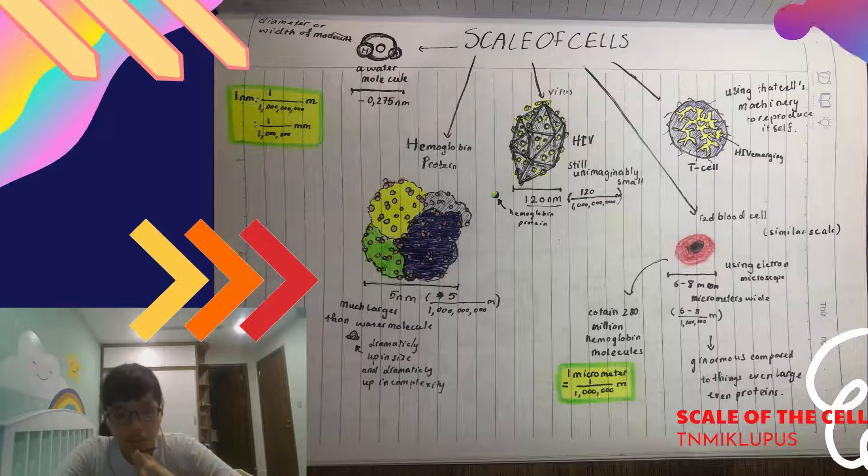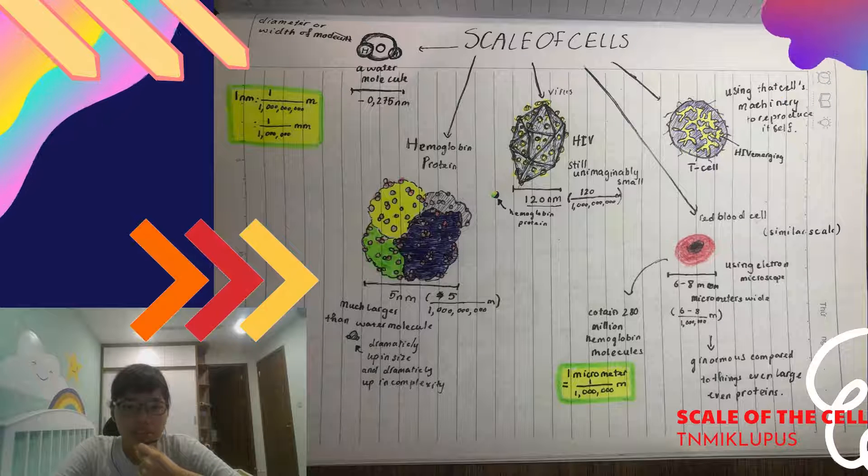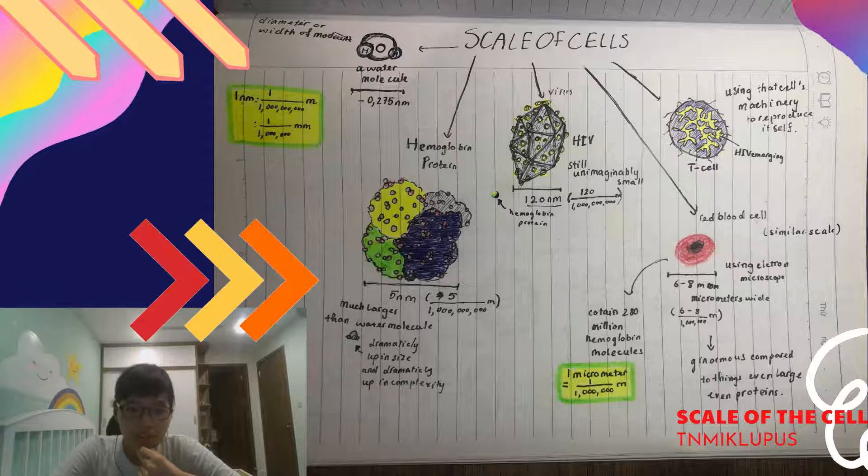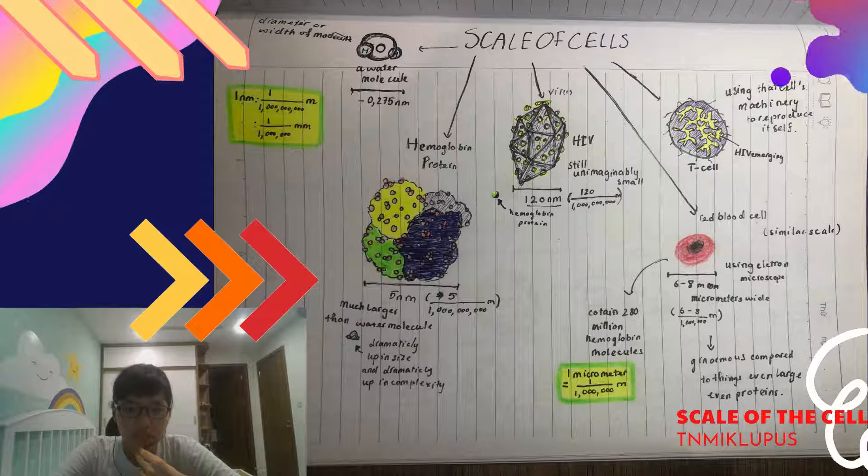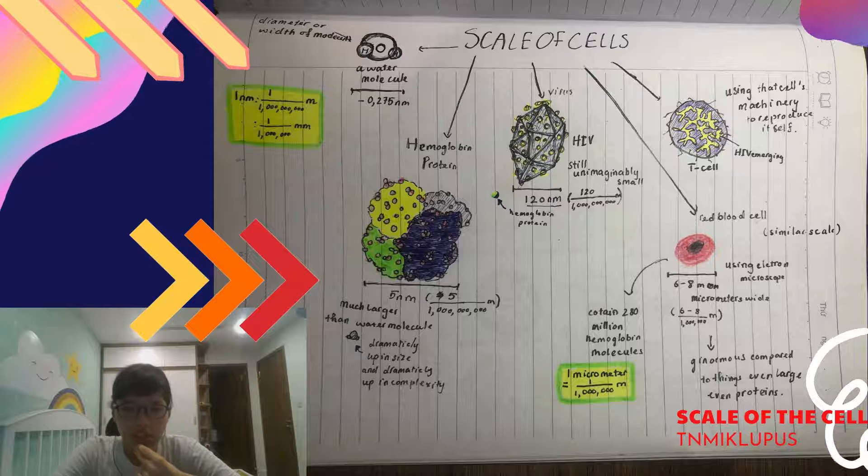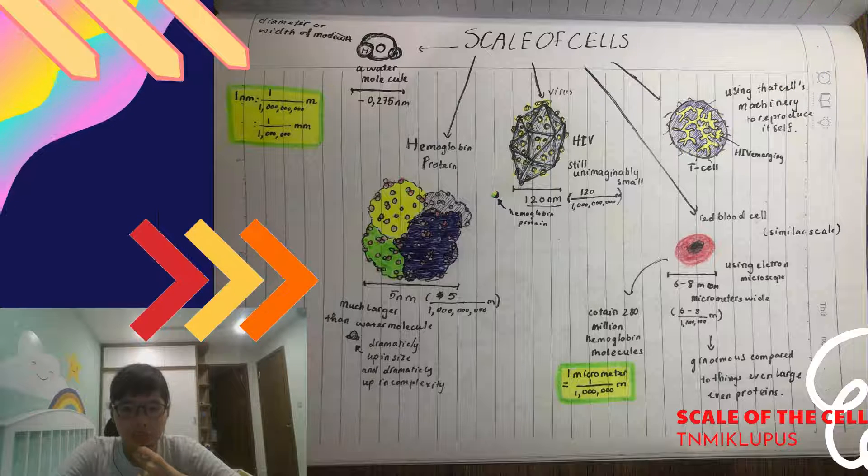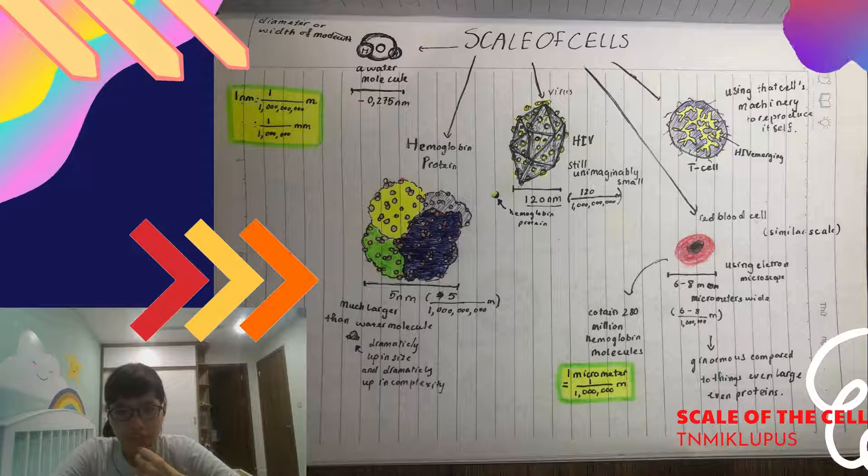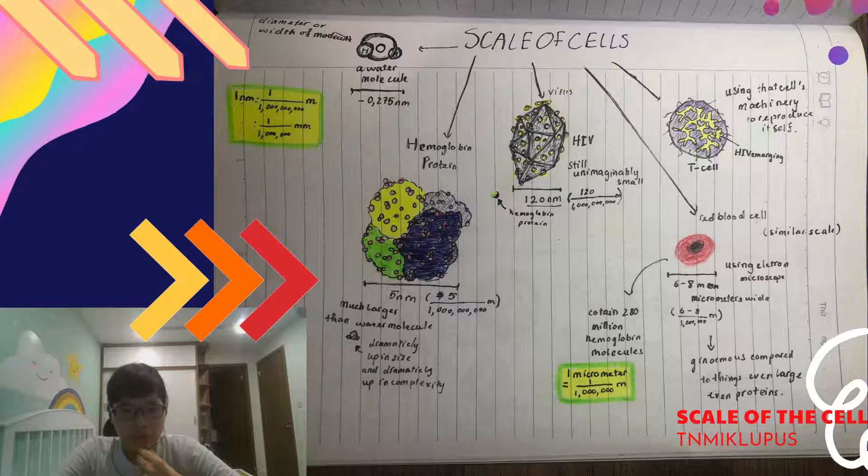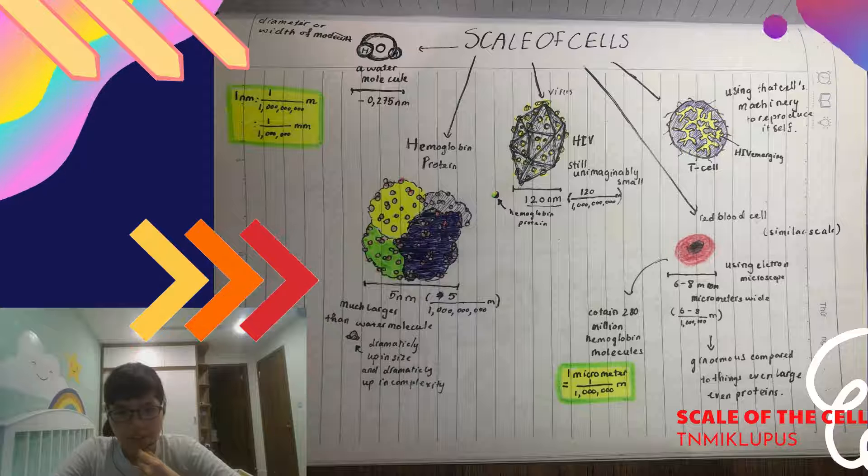And on this similar scale is the T cell. You have a red blood cell. And the red blood cell is going to be 6 to 8 micrometers wide. So this is 6 to 8 millionths of a meter.